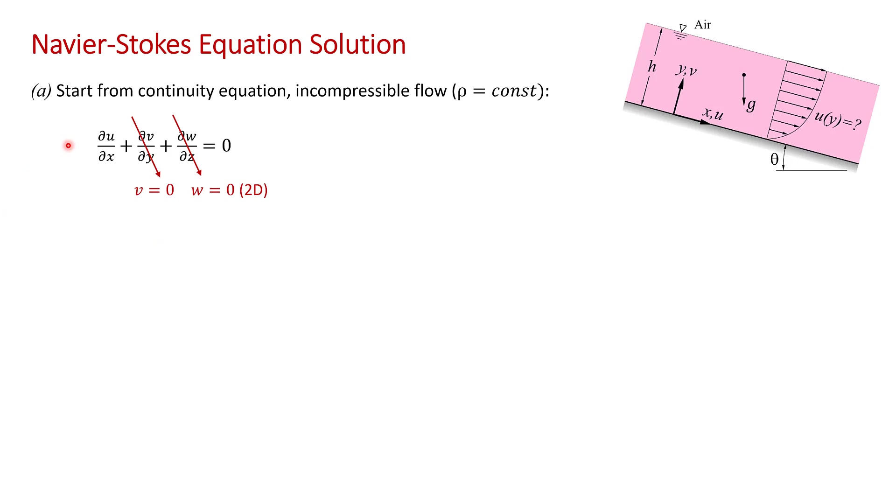For part a, in order to solve for the velocity field u(y), we start with the incompressible version of the continuity equation, which we derived in chapter 4. This is for density equals a constant. We can apply a few simplifications. Remember that v is zero everywhere, so this term goes to zero. It's two-dimensional, so w is everywhere zero. We end up with ∂u/∂x = 0. This tells you that the velocity profile is not changing in the x direction. This is called fully developed flow. So u is only a function of y.